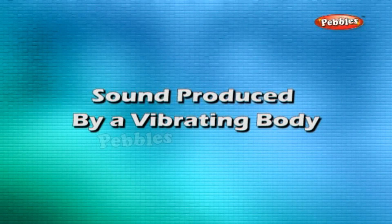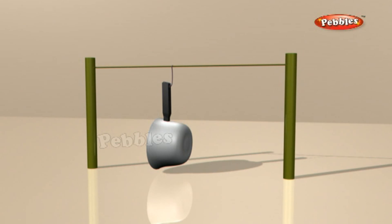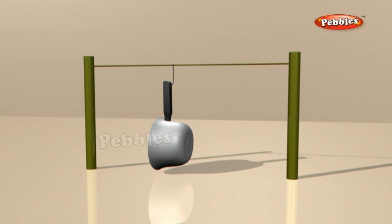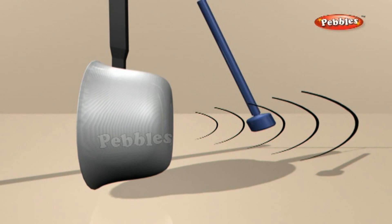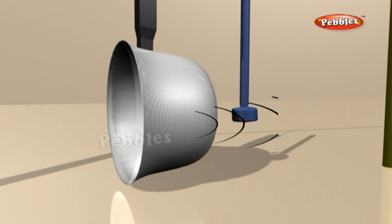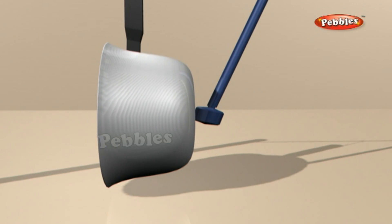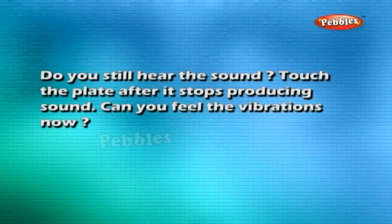Sound is produced by a vibrating body. Take a metal plate or a shallow pan. Hang it at a convenient place so that it does not touch any wall. Now strike it with a stick. Touch the plate or pan gently with your finger — do you feel the vibrations? Strike the plate with the stick and hold it tightly with your hands immediately after striking. Do you still hear the sound? Touch the plate after it stops producing sound — can you feel the vibrations now?